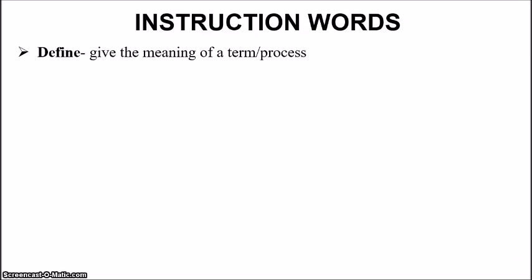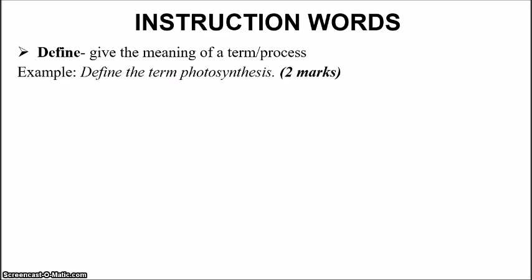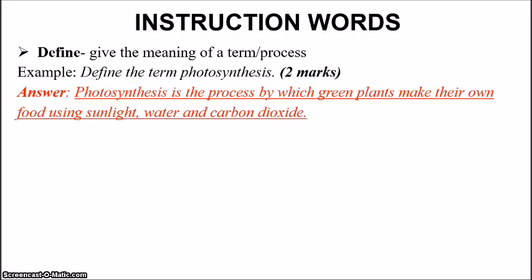Let's look at the next instruction word: define. That means to give the meaning of a term or a process. For example, 'define the term photosynthesis.' For two marks, you want to mention two points. Photosynthesis is the process by which green plants make their own food using sunlight, water, and carbon dioxide — those are the raw materials. So you have the actual process and the raw materials.